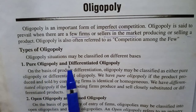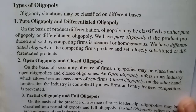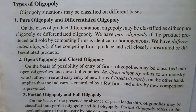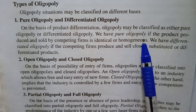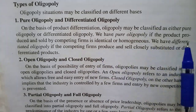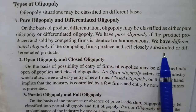The oligopoly situation may be classified on different bases. The first classification is pure oligopoly and differentiated oligopoly. We have pure oligopoly if the product produced and sold by competing firms is identical or homogeneous. We have differentiated oligopoly if the competing firms produce and sell closely substituted or differentiated products.